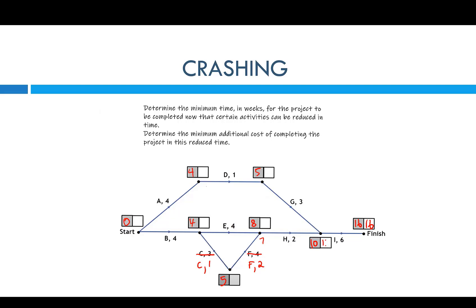We get ten on the backward scan — sixteen minus six is ten. Ten minus three gives seven. Ten minus two gives eight. Seven minus one gives six. Eight minus two gives six. Eight minus four gives four, and five minus one also gives four. Then that becomes zero. So now I have a new critical path.